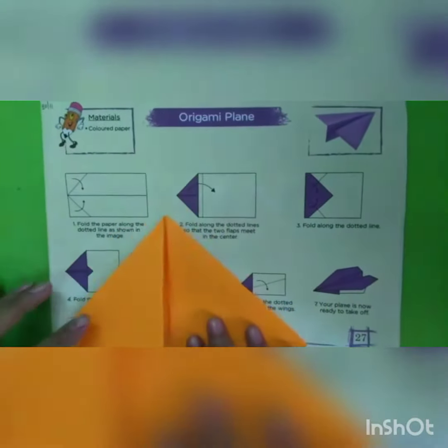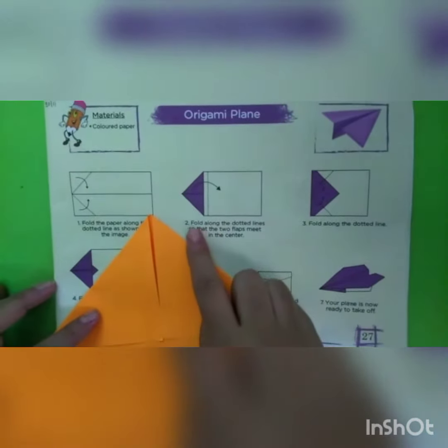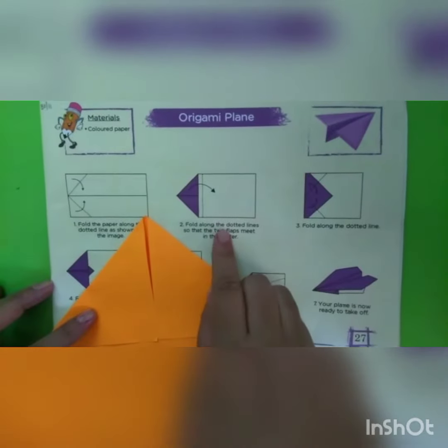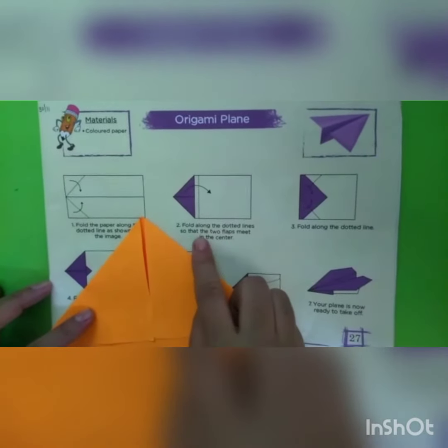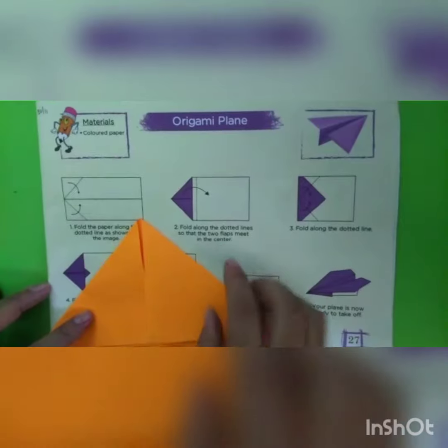Students, in step 2, fold along the dotted lines so that the two flaps meet in the center, like this.